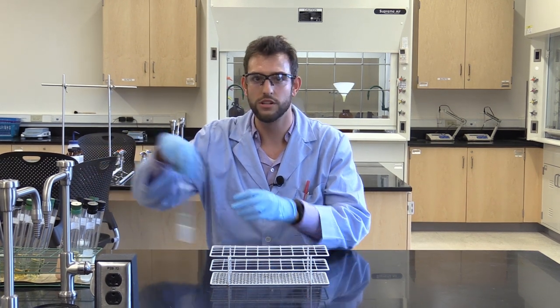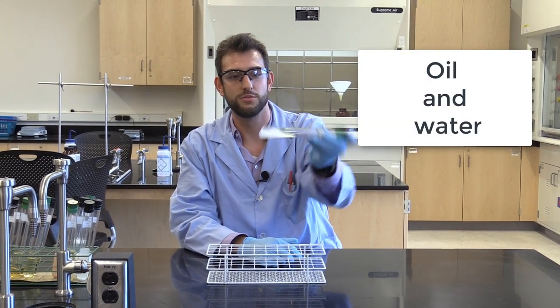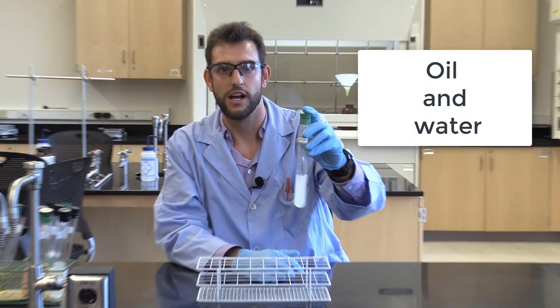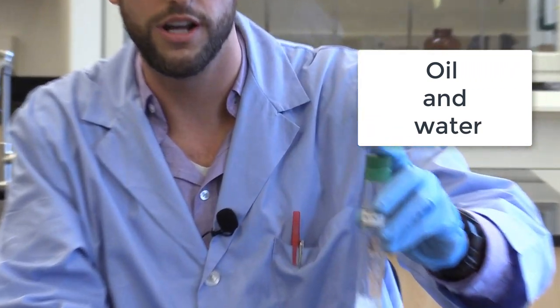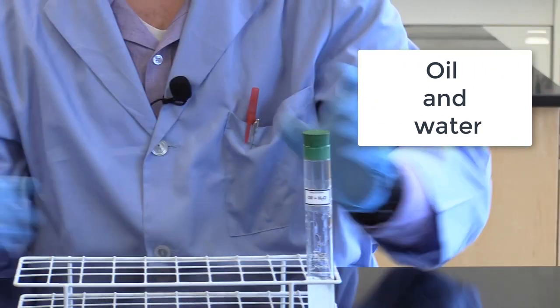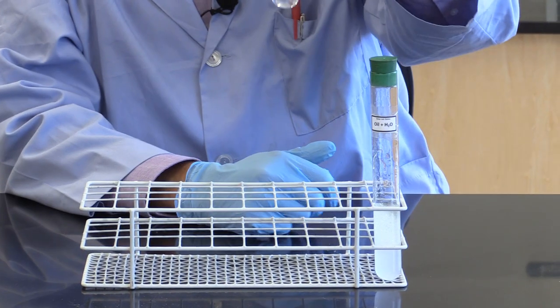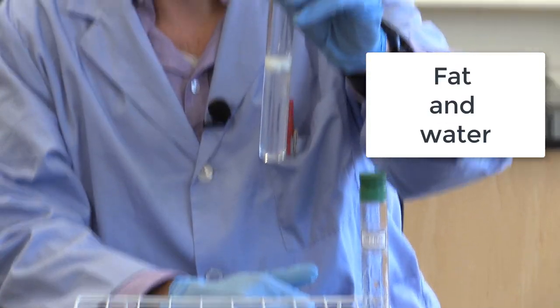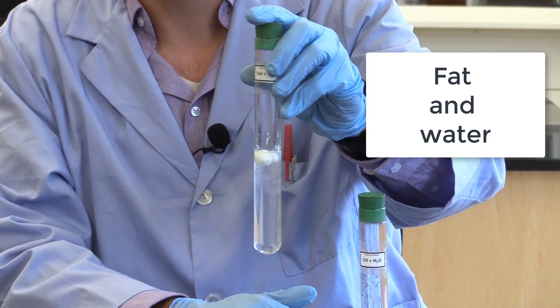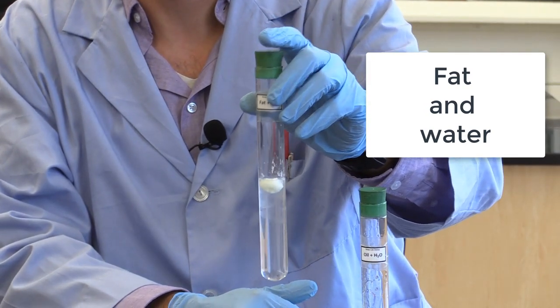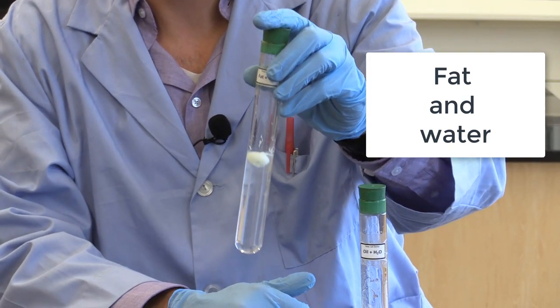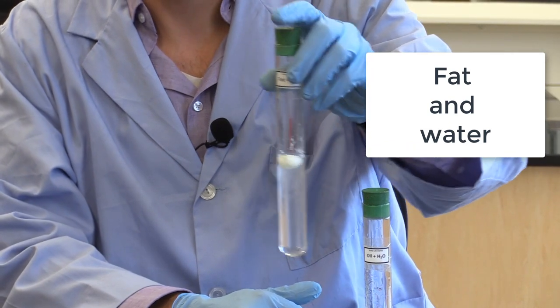First, we will look at oil and water. As you can see, they are not soluble in each other, as oil is nonpolar and water is polar. Fat is extremely insoluble in water, as you can see in the second tube. Fat has a longer carbon chain, which decreases its solubility. This is why you see a huge chunk floating at the top.